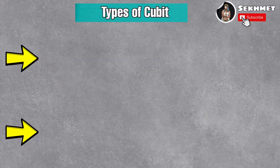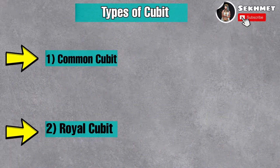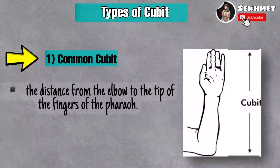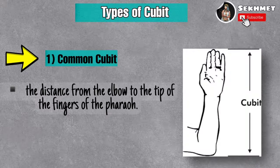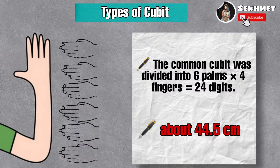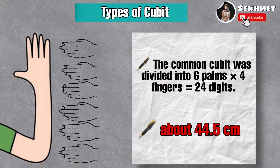There were two types of cubits: the common cubit and the royal cubit. The common cubit is the distance from the elbow to the tip of the fingers of the pharaoh. It was divided into six palms, each consisting of four fingers, which means the common cubit was 24 digits, almost equal to 44.5 centimeters.